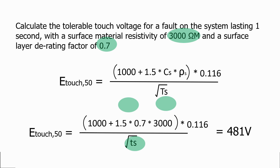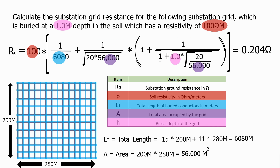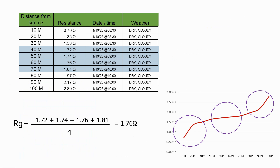We then use the substation grid parameters to calculate the grid resistance, and we learn how we can measure the actual grid resistance for our substation grounding system.